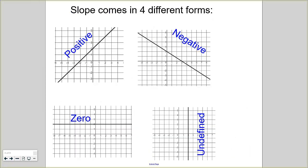Slope comes in four different forms. We've got a positive slope, which would be this one right here, which means as you move up from left to right all the y values are increasing, so that's positive. We've got a negative slope, which means as you move from left to right the y values are decreasing, negative.